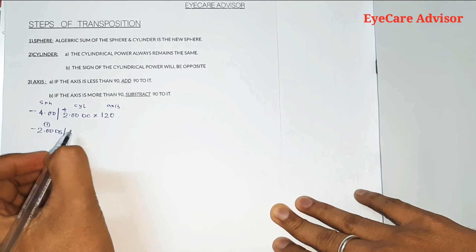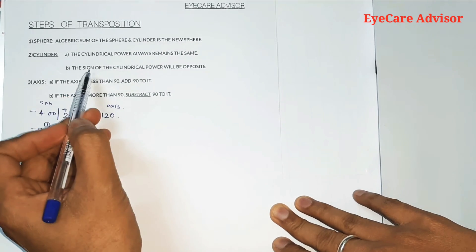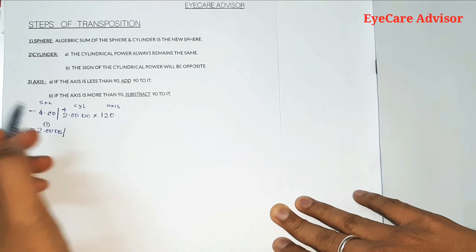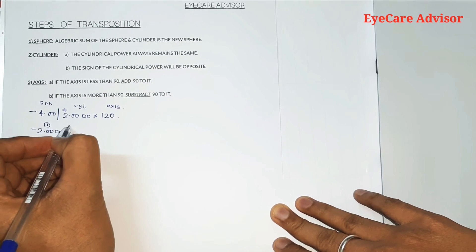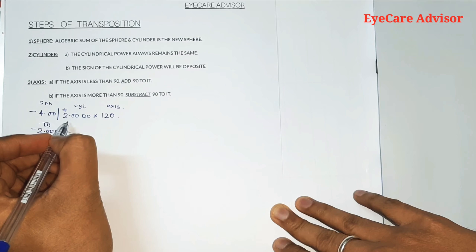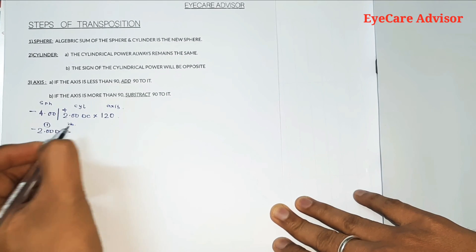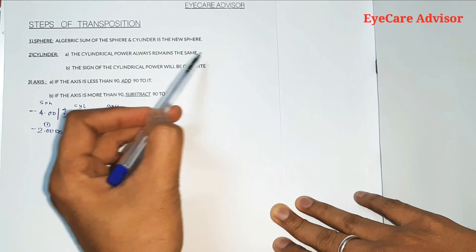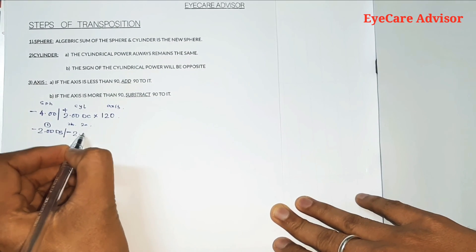Step two for the cylinder: the sign of the cylindrical power will be opposite. Here it is plus, so it will become minus. That is step 2a — the sign changes. Step 2b — the cylindrical power always remains the same, so the cylinder power remains 2. So the new cylinder is minus 2.